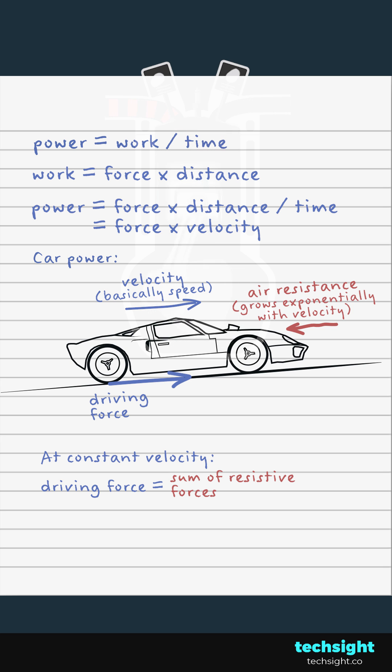These include air resistance, which grows exponentially with velocity, rolling resistance, and gravity if the car is driving uphill.